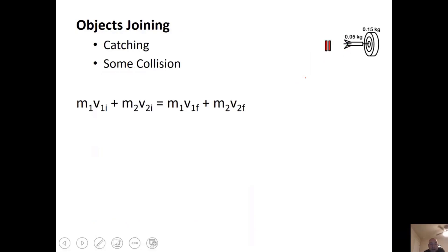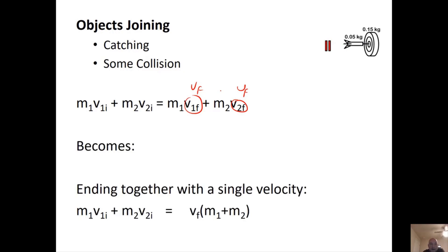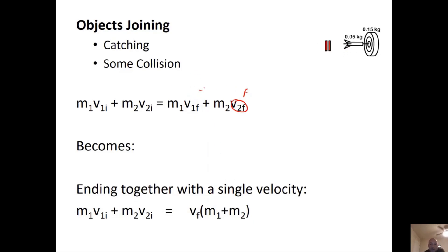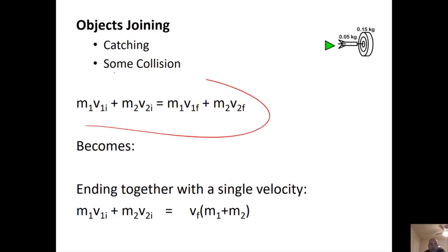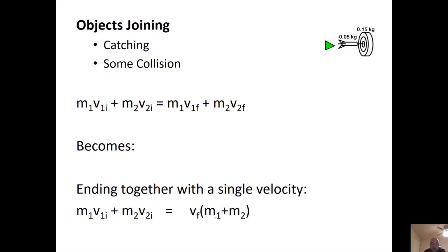For objects joining: two masses both travel together afterwards with the same final velocity. We can factor out VF so it becomes VF times (mass one plus mass two). This specialized form is useful because if they ask for the combined velocity after the scenario, you can go straight to this equation to solve for it.